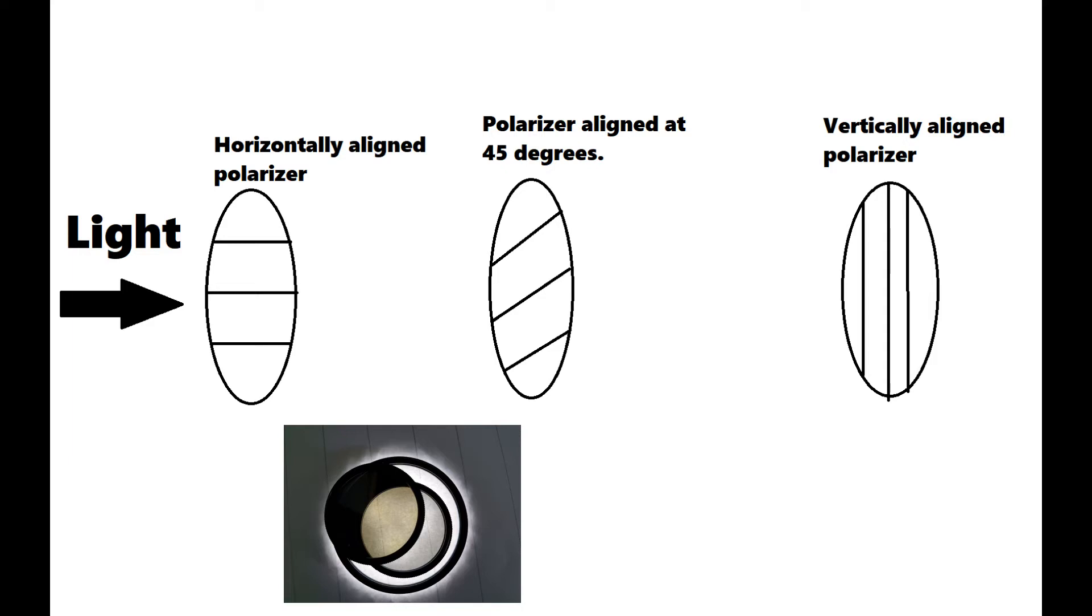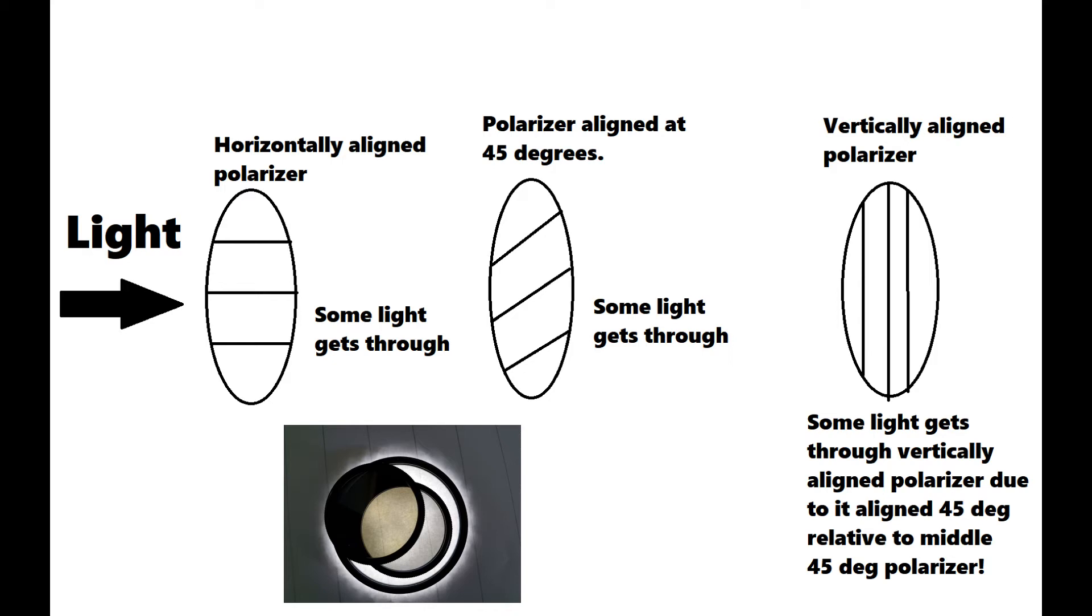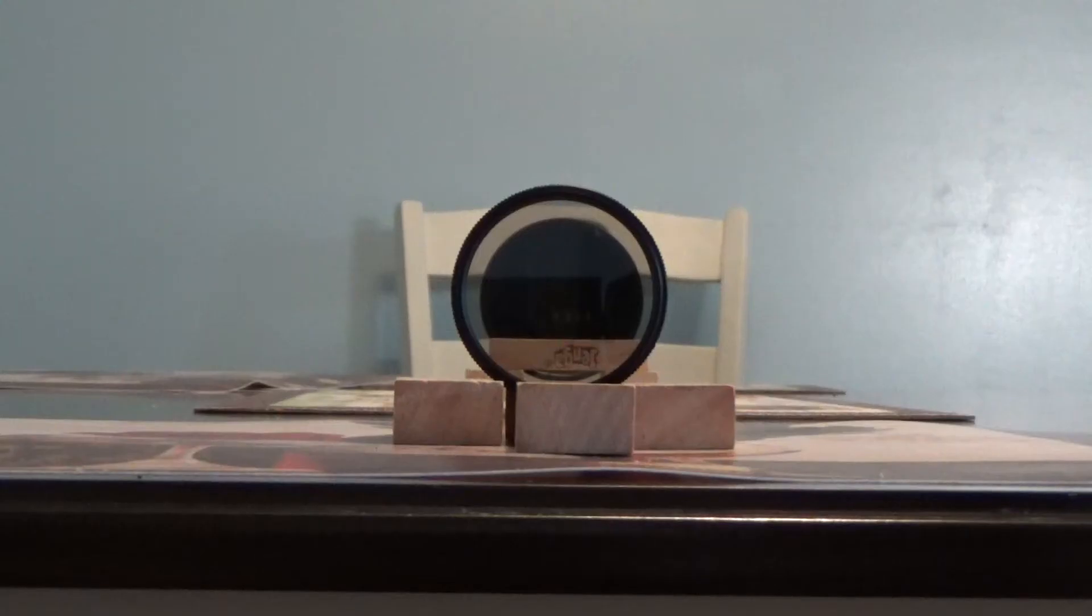...is aligned at 45 degrees is also aligned at 45 degrees with the vertically aligned polarizer, allowing light to get through. If all three polarizers are aligned at 45 degrees relative to each other, then light will get through.